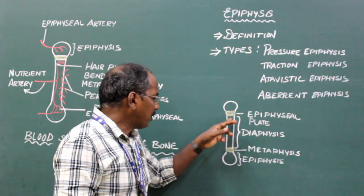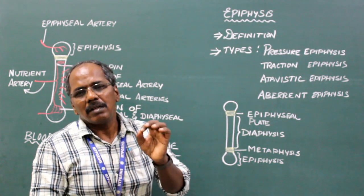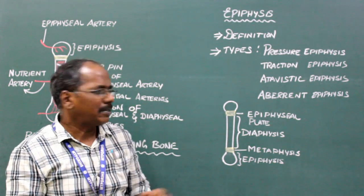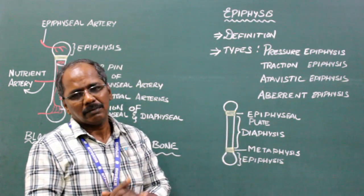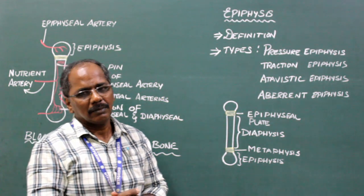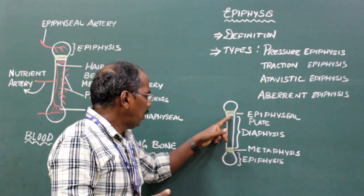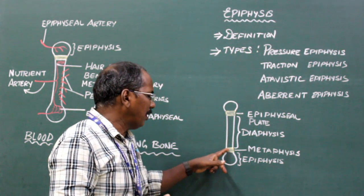The shaft of a long bone which develops from primary center is known as diaphysis. The epiphysial ends of the diaphysis are known as metaphysis.